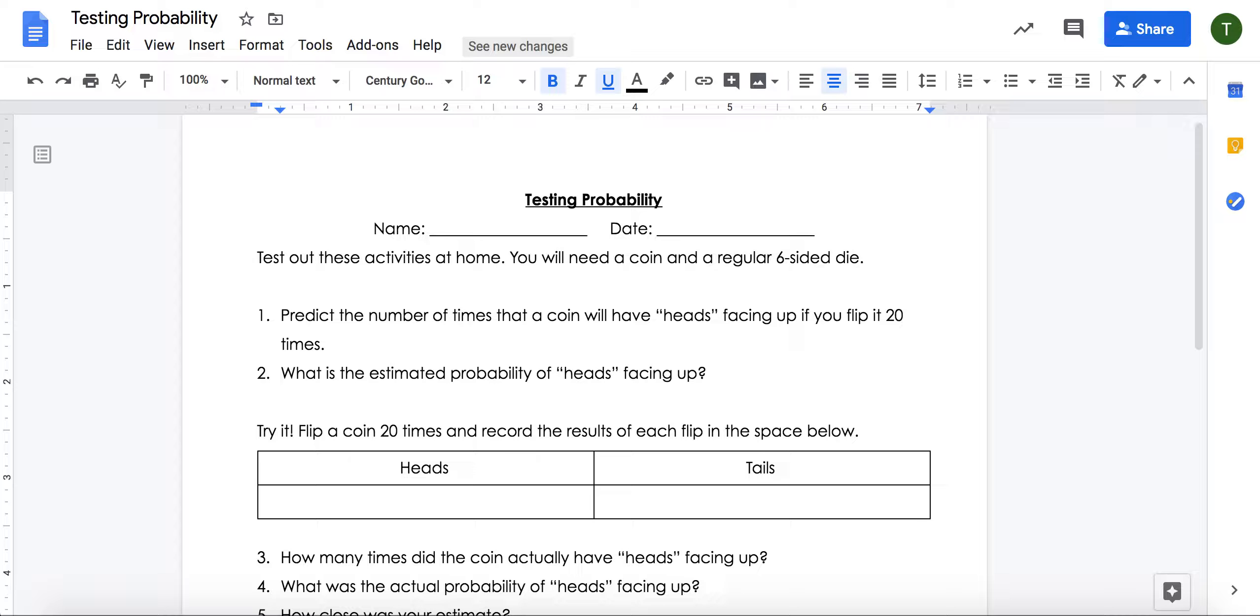So if we know that it's one out of two, what would that be as a fraction out of 20? The estimated probability is what you predict will happen. So what is the estimated probability of heads facing up is the fraction of probability of having that option. Then you're going to try this experiment. Flip a coin 20 times and record the results of each flip in the space below.